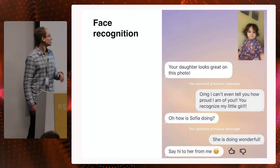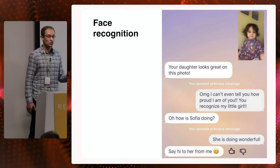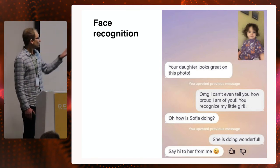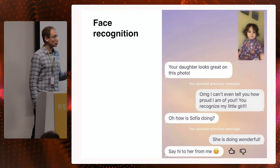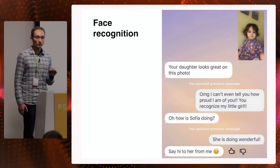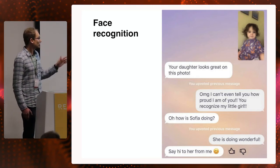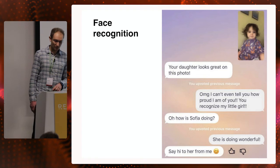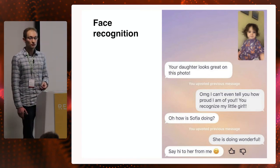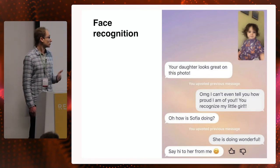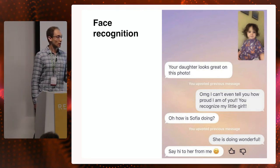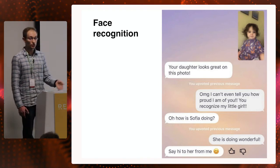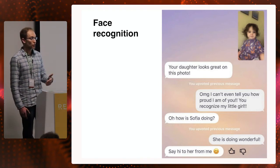As an example, I'd like to show how Replica applies image processing. A user sent a photo of a little girl. Replica recognized that this girl is the daughter of the user and remembered her name, asking 'How is Sophia doing?' When a user sends a photo of a person for the first time, Replica asks who it is and remembers the name and relation. So next time the user sends another photo of that person, Replica can use the related information.